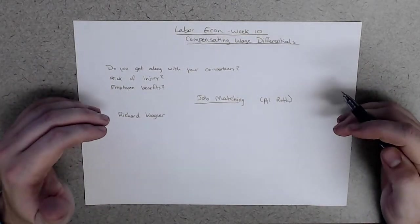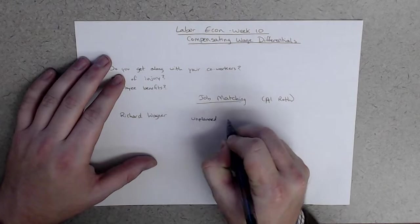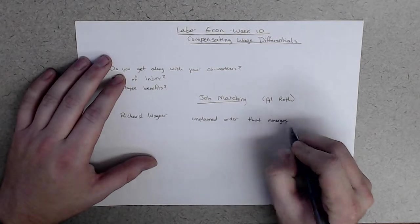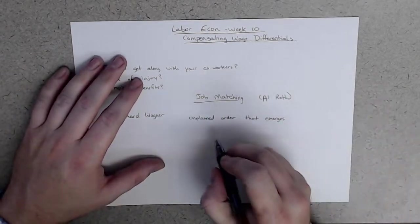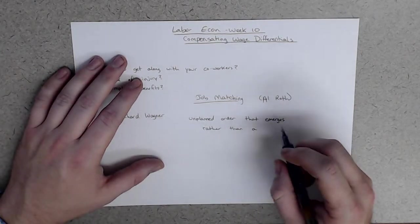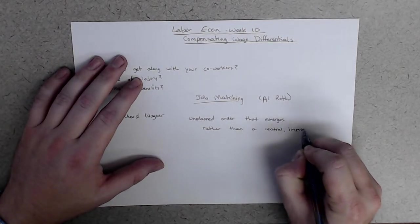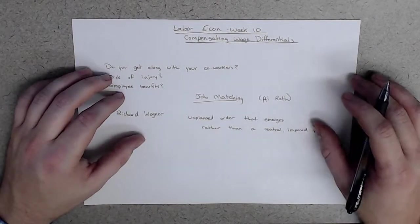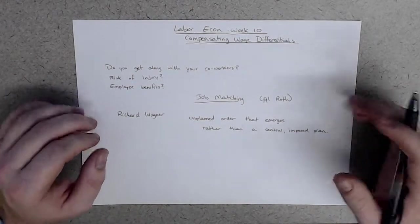So when we talk about job matching, we're going to talk about the unplanned order that emerges as a result of people doing their own thing, instead of a central plan or imposed plan. And so the point here is that people tend to find jobs on their own without having to receive direct orders from anyone. We're able to do it without someone having to tell us what job to do.